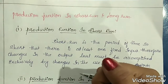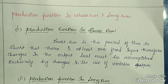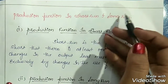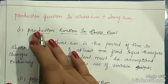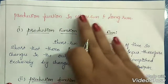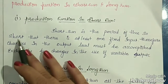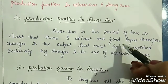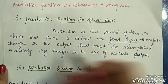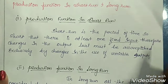Up to now we have understood the meaning of production function, factors of production, and fixed and variable factors of production. Next we need to understand the production function in short run and long run — how the production process is carried on in each. Short run is the period of time so short that there is at least one fixed input. Therefore, changes in output level must be accomplished exclusively by changes in the use of variable inputs.